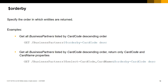Another supported query option is $orderby. With this query option, we can specify in our query request the order in which the entities have to be returned. The first example will return the business partner entities ordered by the CardCode property in descending order. The second example also orders by CardCode descending, but combined with the $select query option, only the properties CardCode and CardName will be part of the response body.